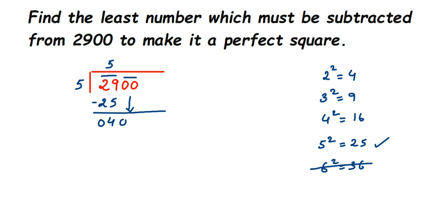When dropping down, you must bring both zeros since they are a pair, giving us 400. Now we need to find the new divisor for this step — this is very important. You take the number in the quotient so far, which is 5, and double it: twice of 5 is 10. So 10 goes in the divisor position. But we still need one more digit in the ones place.